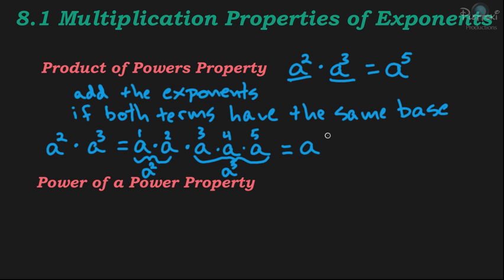The exponent is five. So you have a times itself five times, which gives you a to the fifth. That's why the product of powers property works. When you have the same base and two powers with the same base multiplied by each other, you can just add the exponents.